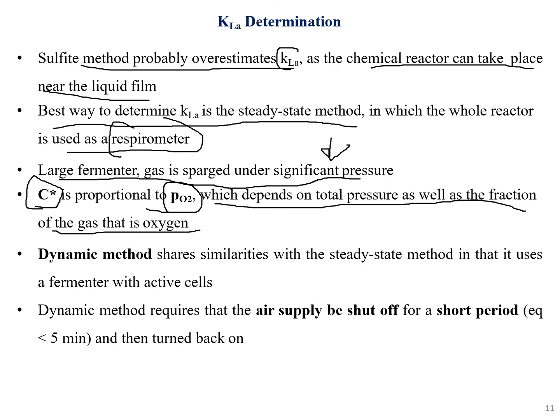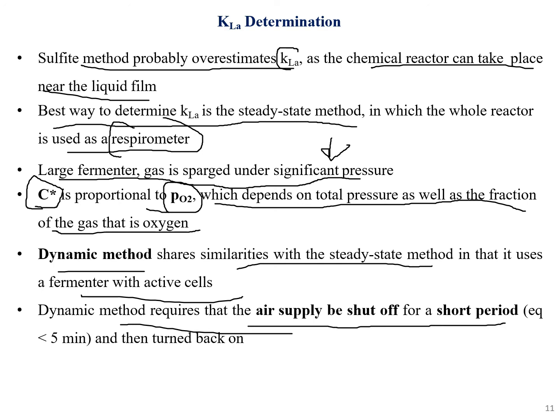The dynamic method shares similarities with the steady state method in that it uses a fermenter with active cells. It requires the supply of air to be shut off temporarily for a short period and then turned back on.